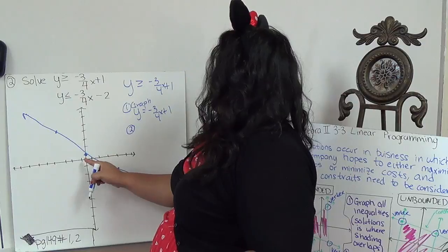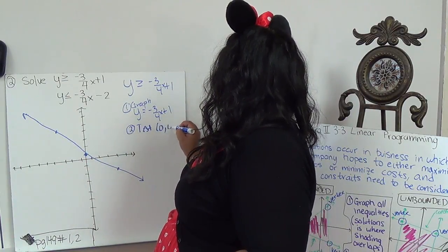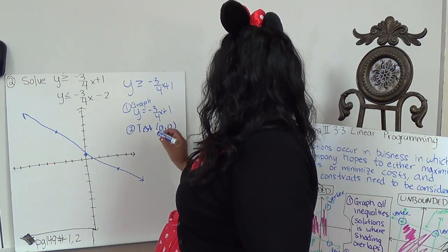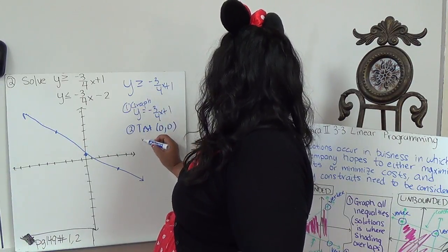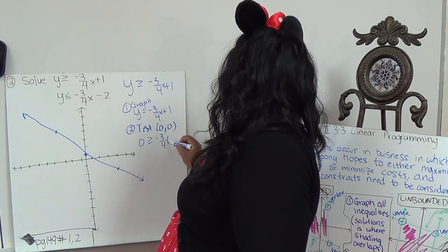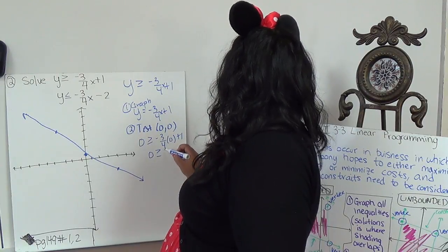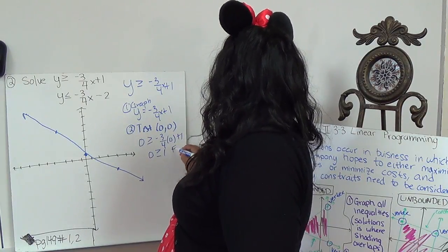And then the next one, because 0, 0 is close, but it's not on there, we're going to test 0, 0. So we have into the original equation. So 0 is less than or equal to negative 3 fourths times 0 plus 1. 0 is greater than or equal to 1. This is false.